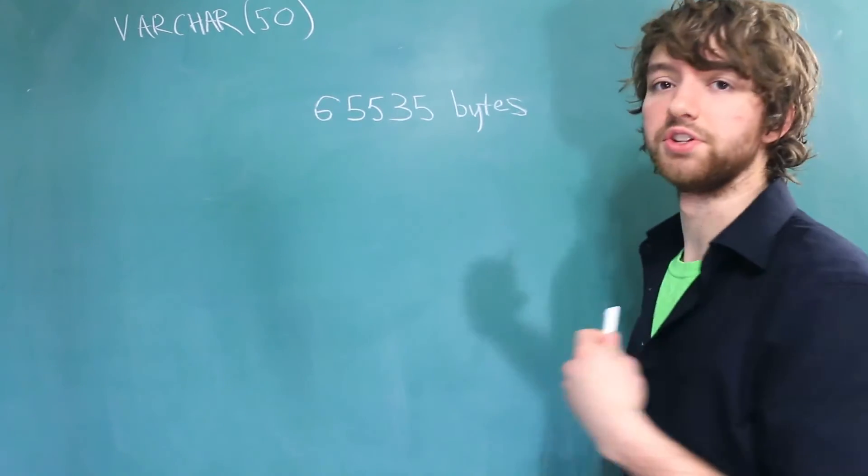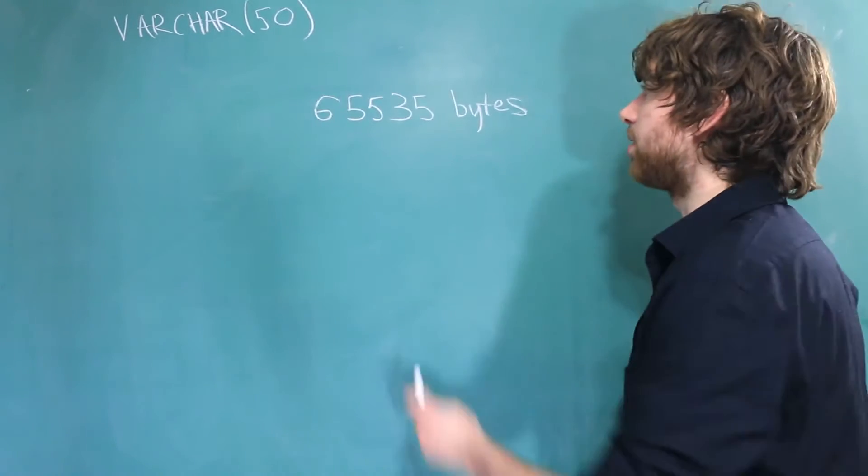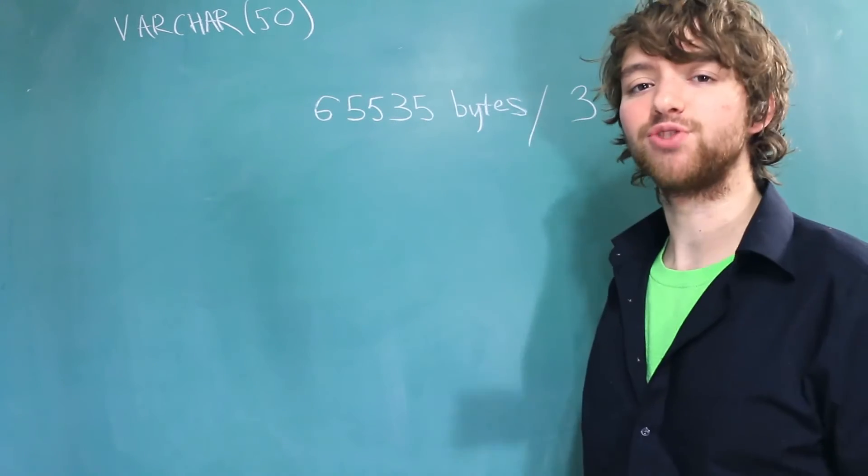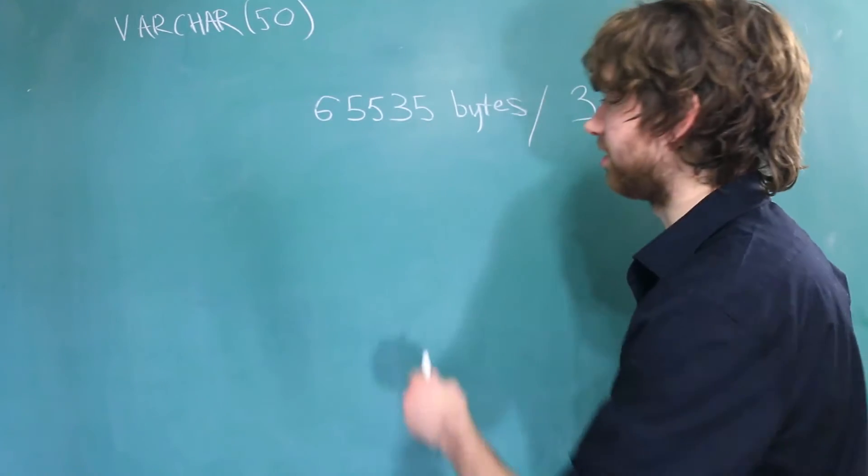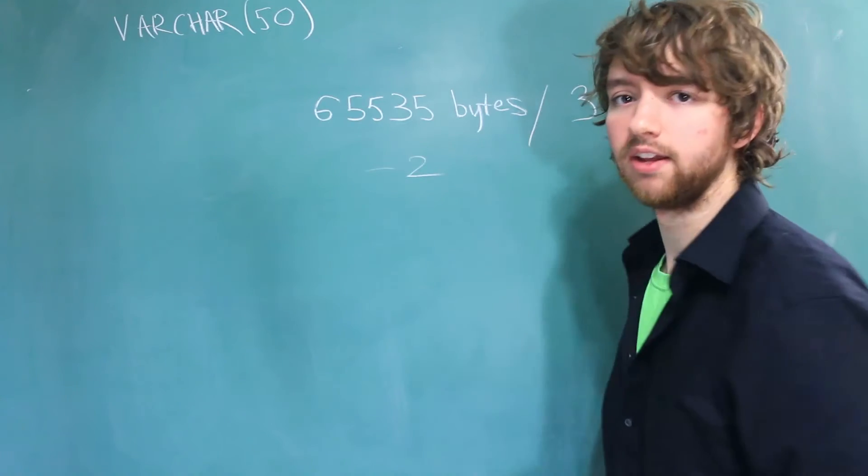You also once again have to consider the encoding. For example, some characters can take up to 3 bytes. That means you automatically need to divide this by 3. And each row stores up to 2 bytes to keep track of how long that string is, so you need to subtract 2 from that.